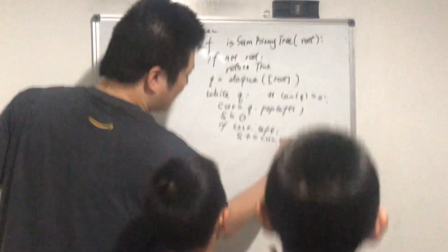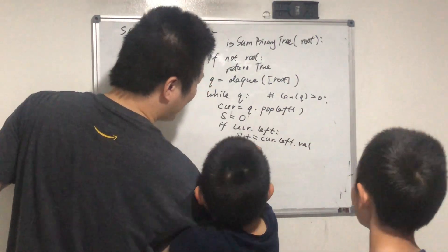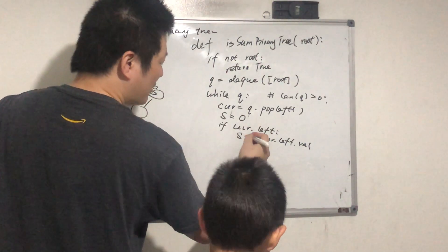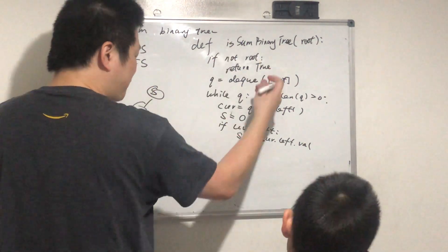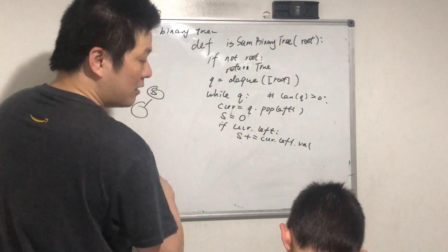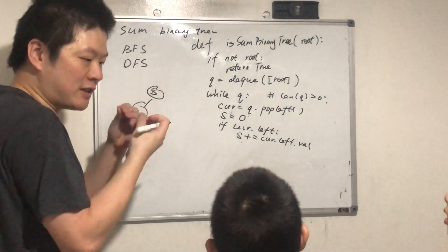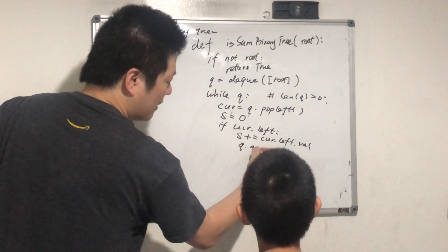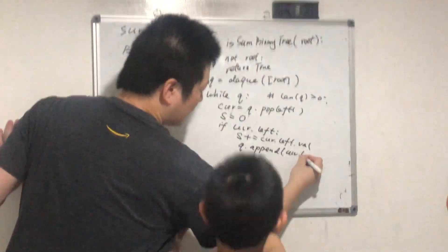And then we want to put it into the queue. We want to put current.left in the queue. How can we do this? Because we take the kids out of the queue and we want to push its kids back to the queue, right? So you do q.append(current.left). And if current.right...